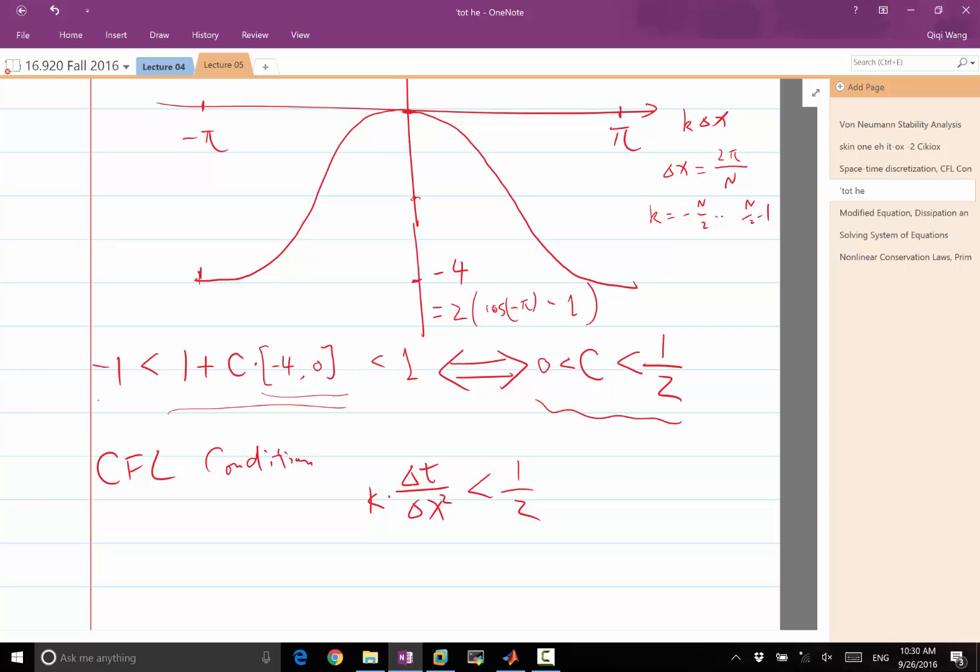While if you are within the circle, then if you look at the error equation, the error without contribution from the truncation error is going to shrink for each time step. So even with the addition of the truncation error every time step, your solution error is going to stay bounded.